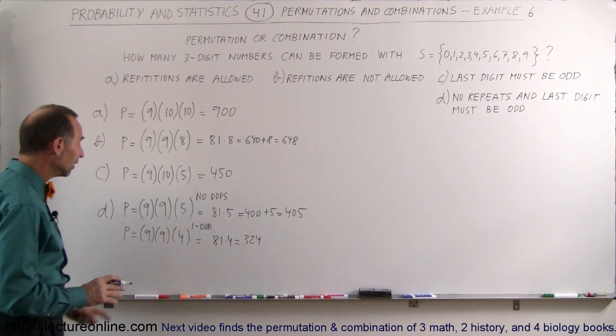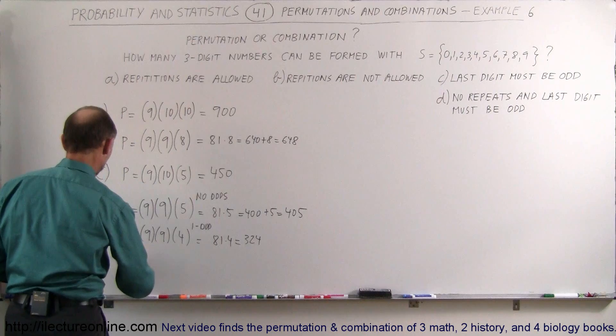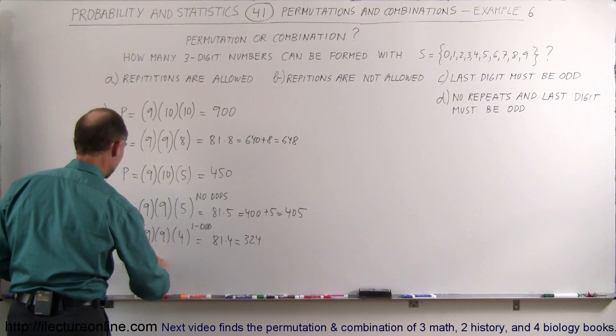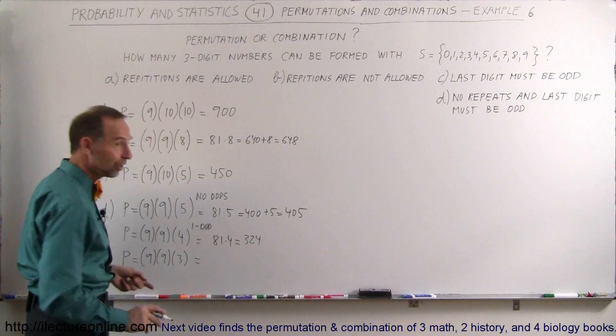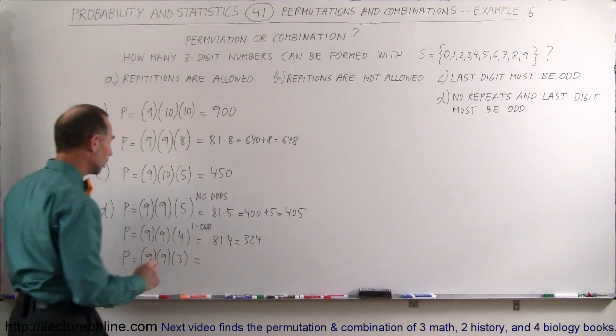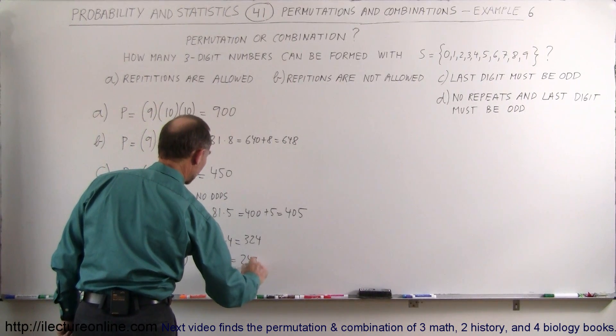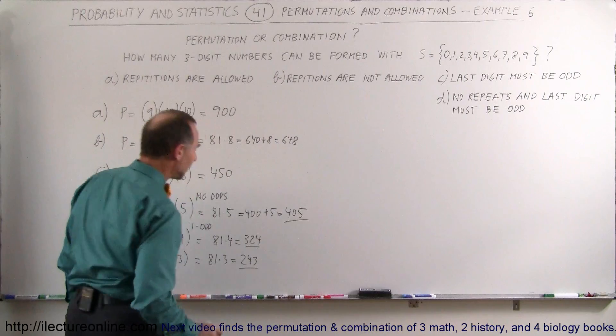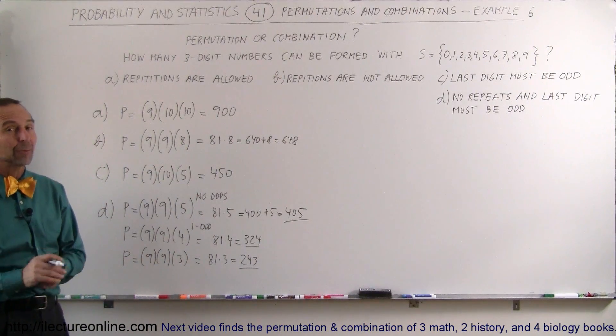And finally, what if the first two numbers were odds, then how many permutations do you have? So permutations equal to 9 times 9, that will not change, but now you'll have 3 possibilities left, because 2 would already be taken, you can't repeat, so therefore we have 81 times 3, which is equal to 243 permutations. So there we have 3 possible answers depending upon what happened before. And that's how we do that problem.